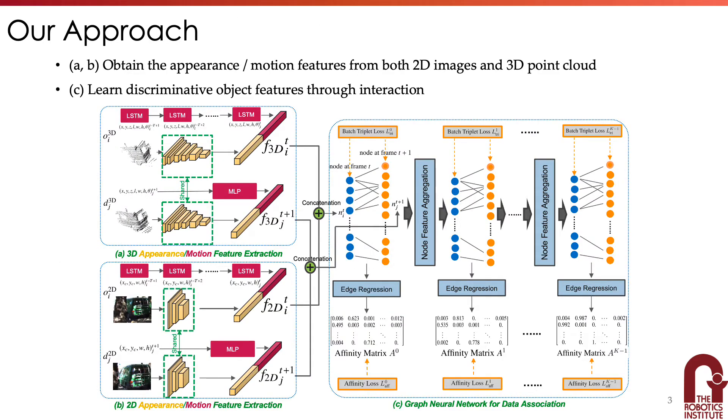To resolve the limitations, we propose two innovations. First, we obtain object features from both 2D and 3D space. Also, we update object features through interaction using graph neural networks.